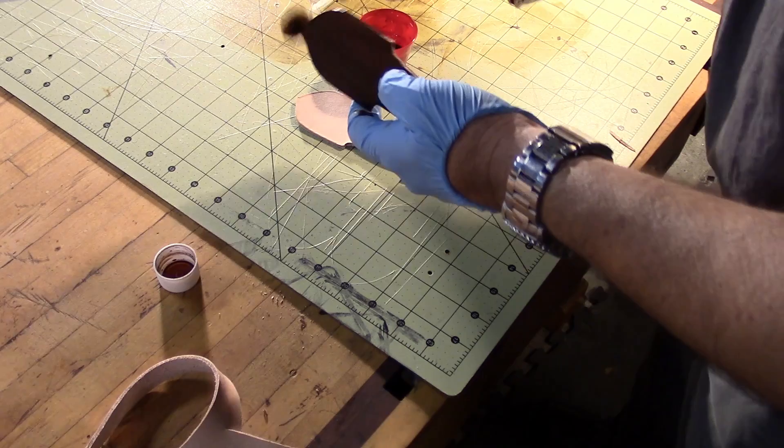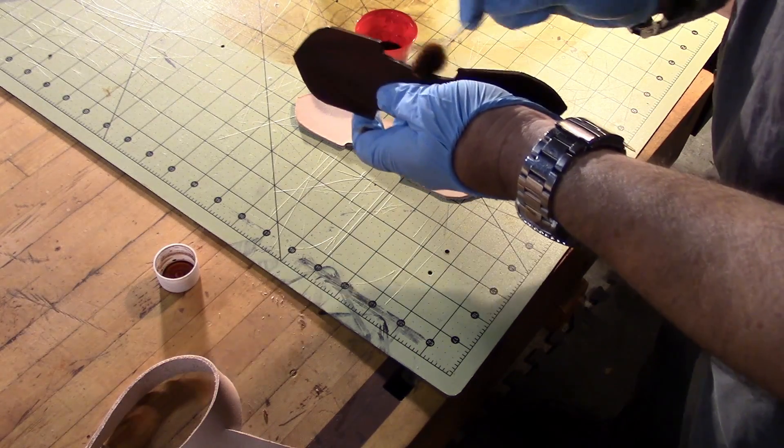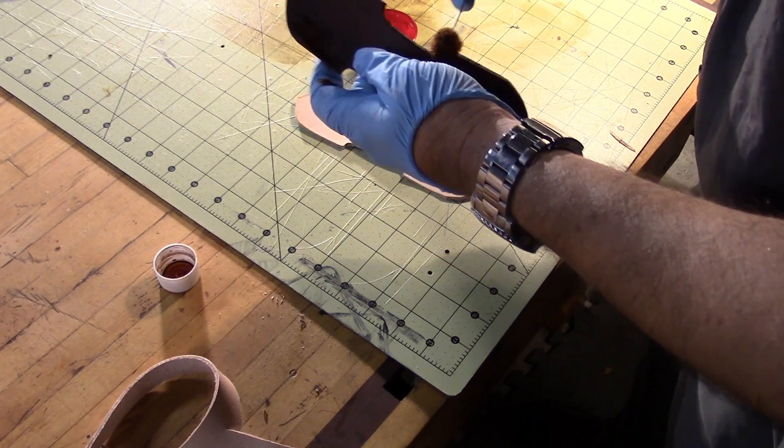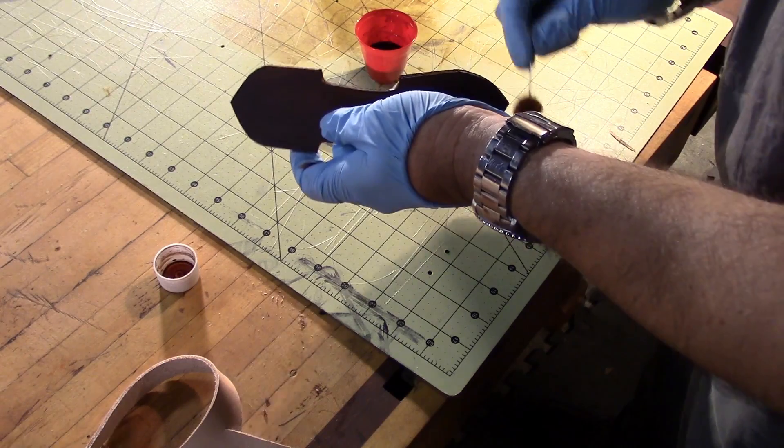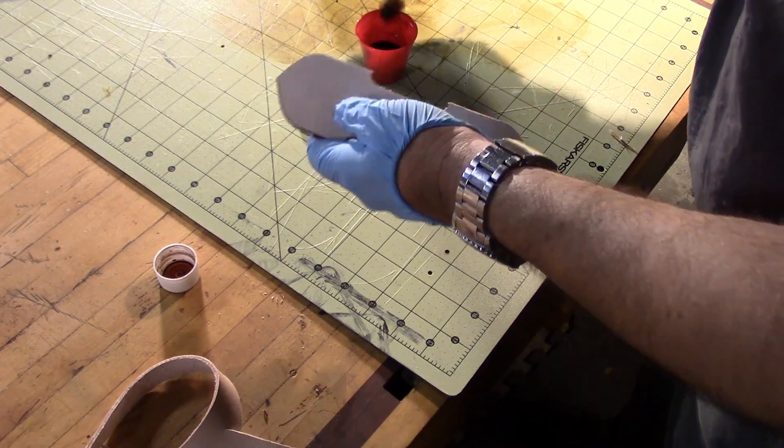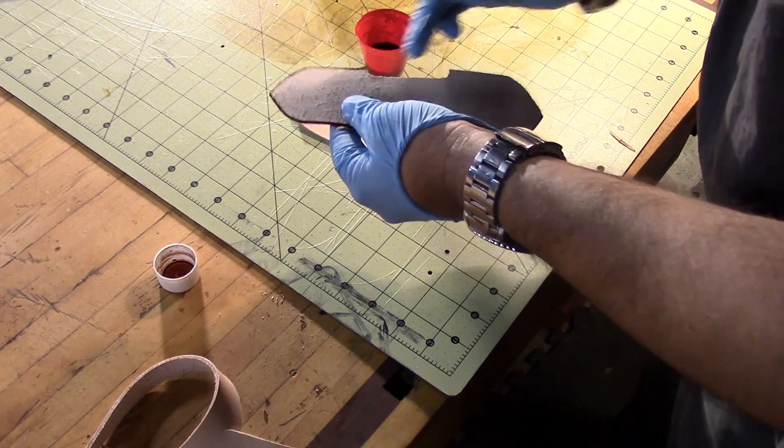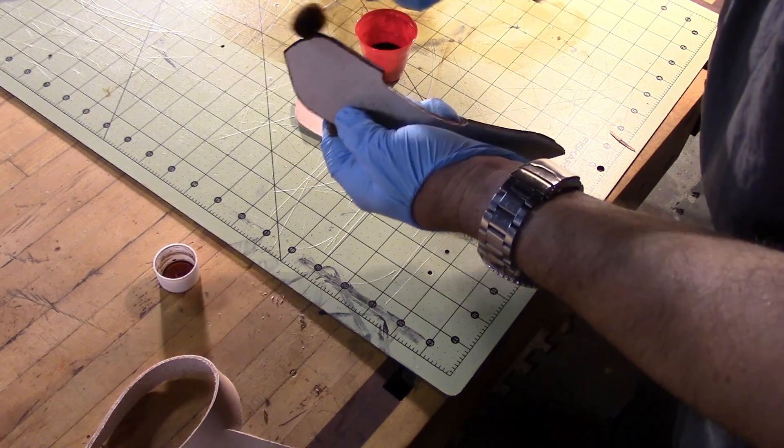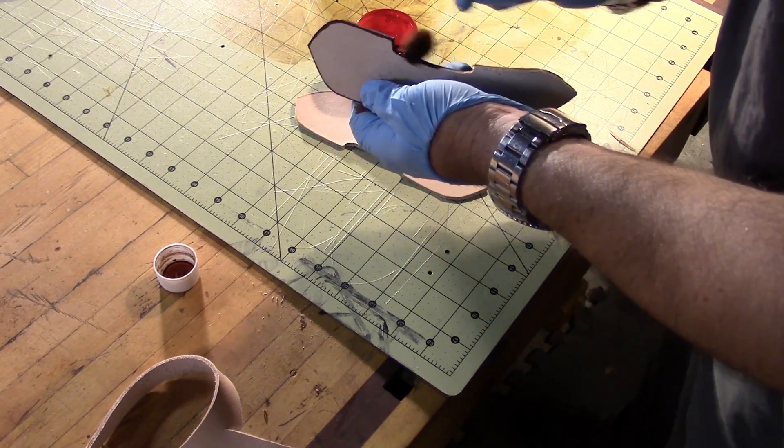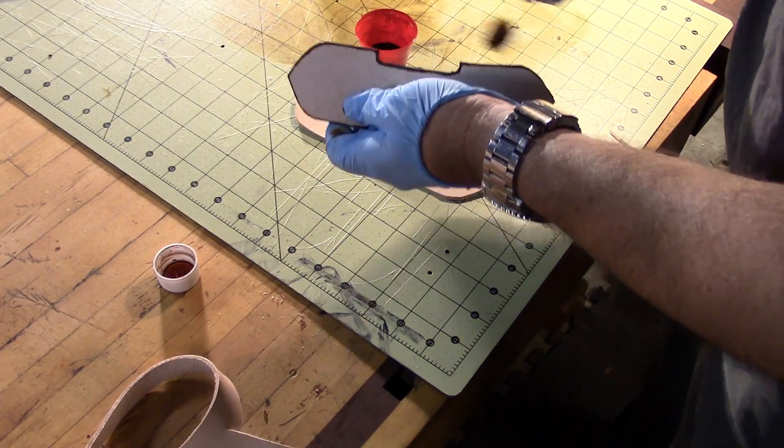We're going to dye these pieces and then we're going to slick the parts of these pieces that, when assembled, will be a single layer of leather. In other words, the parts here that are going to hold the actual D-ring.